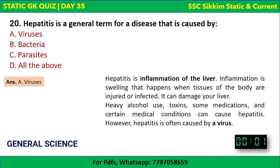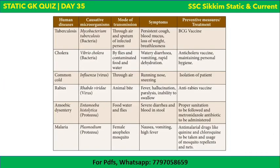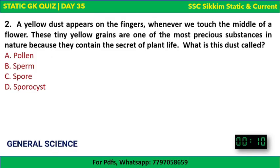That completes all 20 questions. Please write in the comments how much you scored out of 20. Quick recap: influenza is caused by a virus. The disease table covers causative microorganisms, modes of transmission, symptoms, and preventive measures.